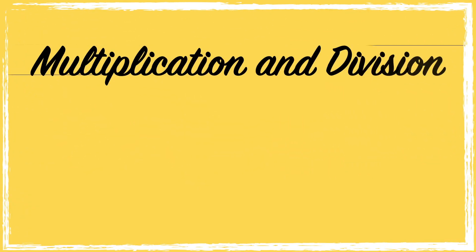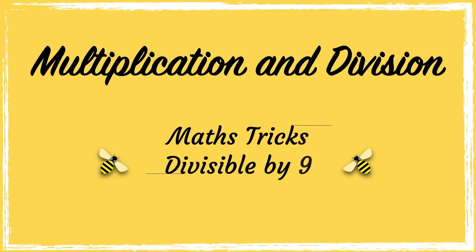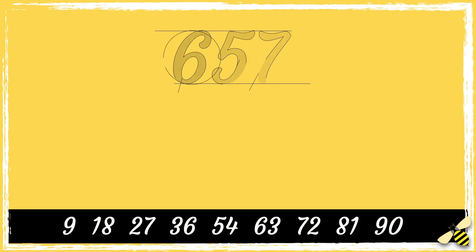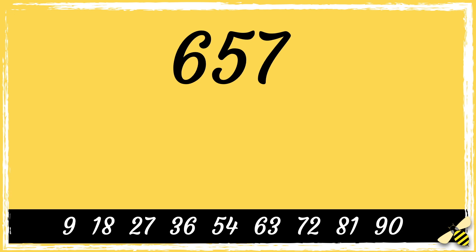In this video, we're going to learn a quick trick to find out if a number can be equally divided by 9. Here is the number 657. A number will be divisible by 9 if the sum of its digits is divisible by 9.